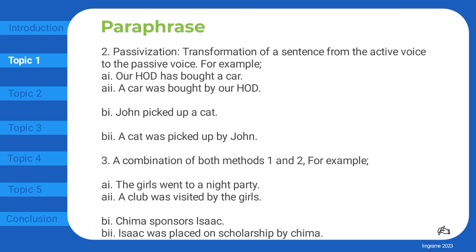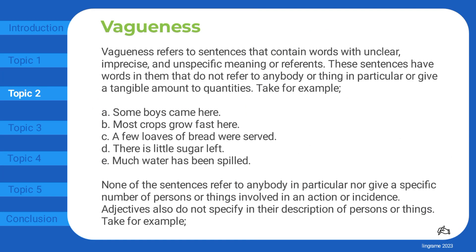The third way is a combination of both methods one and two. For example: 'The girls went to a night party' becomes 'A club was visited by the girls.' 'Chima sponsors Isaac' becomes 'Isaac was placed on scholarship by Chima.'